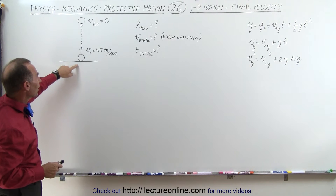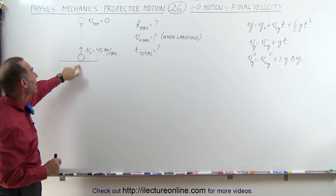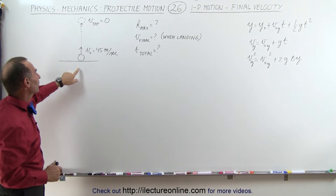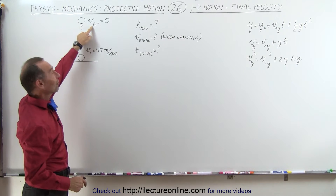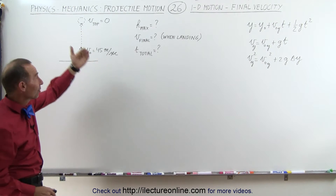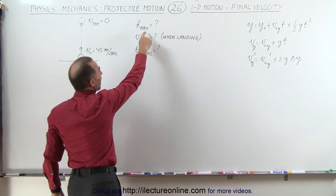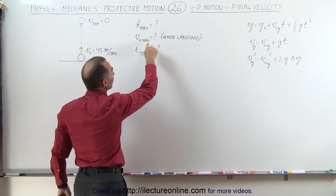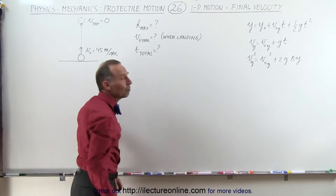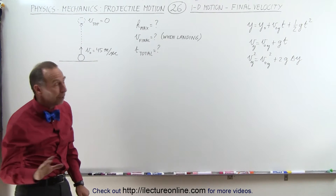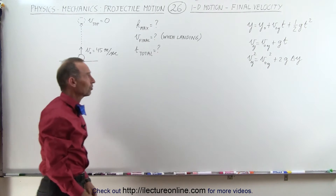First of all, we have an object that's being thrown directly upward, so there's only a one-dimensional motion problem at 45 meters per second. Eventually it'll reach the highest point. The top velocity at that highest point will be zero before it comes back down. What we need to know is the maximum height it attains, the final velocity when it comes back down to the ground, and the total time it took to make the entire trip. To help us, we have the three equations of motion in the vertical direction.